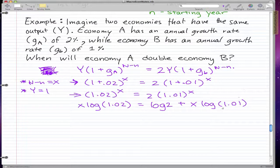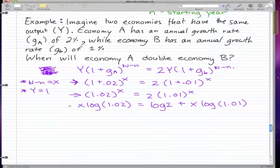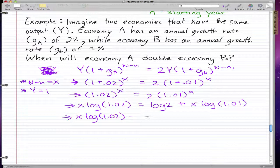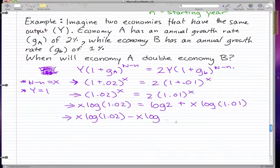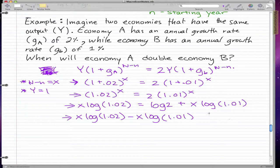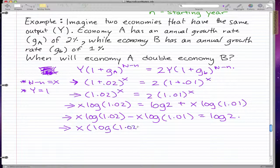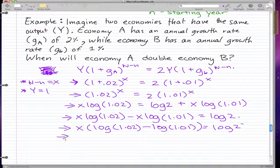So now, if you bring this X log 1.01 to the other side, X log 1.02 minus X log 1.01 equals log 2. Now, we can factor out the X. So we have X times log 1.02 minus log 1.01 equals log 2.